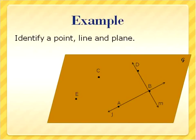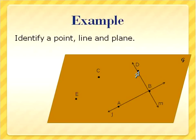Let's look at some examples now. Here are some examples of planes, points, and lines. First we're going to identify a point — can you point out a point? Well, there's point E, right? It's represented with a capital letter next to the dot. There's point C, there's point D — a capital letter next to a point. There's point B.